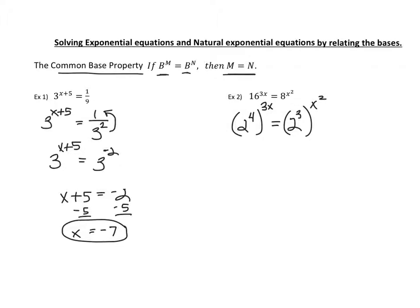It looks like we do have our same bases now, which is 2, but let's clean it up. When you raise a power to a power, or an exponent to an exponent, you multiply them. So on this side, we would have 2 to the 4th times 3x, which gives you 12x. And on the other side, we would have 2 cubed raised to x squared. You multiply those and get 3x squared.